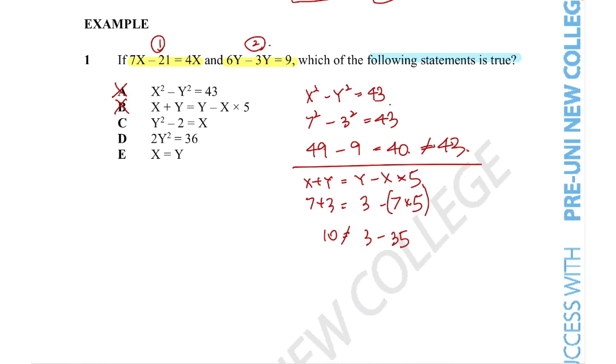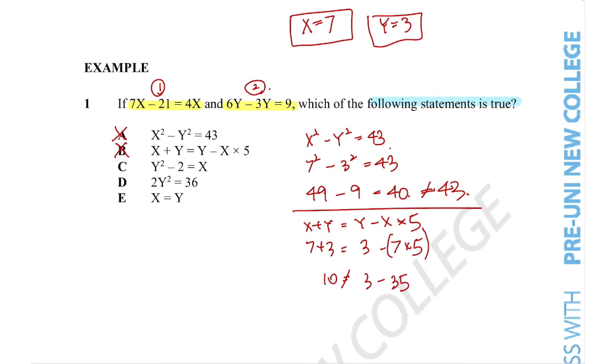Now for answer option C, again, substituting in our values, y is equal to 3, y squared minus 2 equals to x is rewritten to 3 squared minus 2 is equal to 7. Now 3 squared is equal to 9 minus 2 is in fact equal to 7. So it looks like we found the correct statement. Now just to make sure, let's go through the other two answer options.